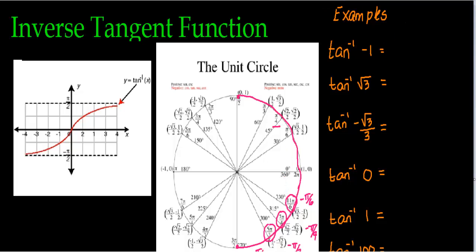For the first example, I have inverse tangent of negative one. This is asking: at what angle will I take the tangent and get negative one? Anytime you see one with tangent, this is an angle that's either pi fourths or negative pi fourths, because that's the only place where you divide sine by cosine and get one — they are the same exact values. Since it's negative one, either sine or cosine is negative, so this angle is not in quadrant one. It has to be in quadrant four.